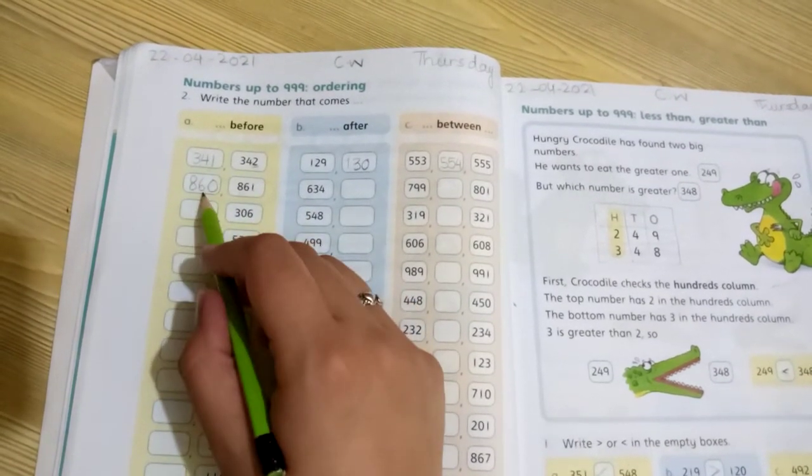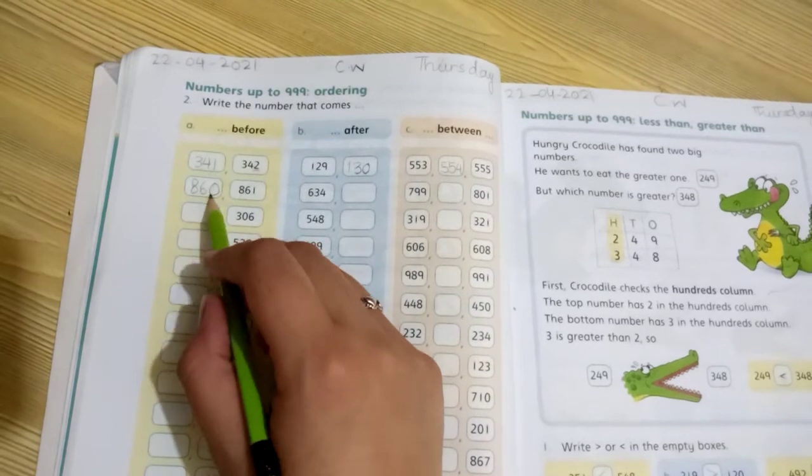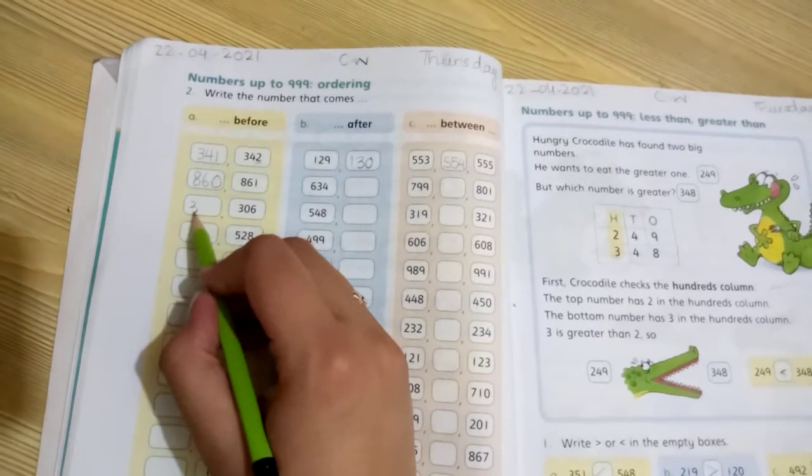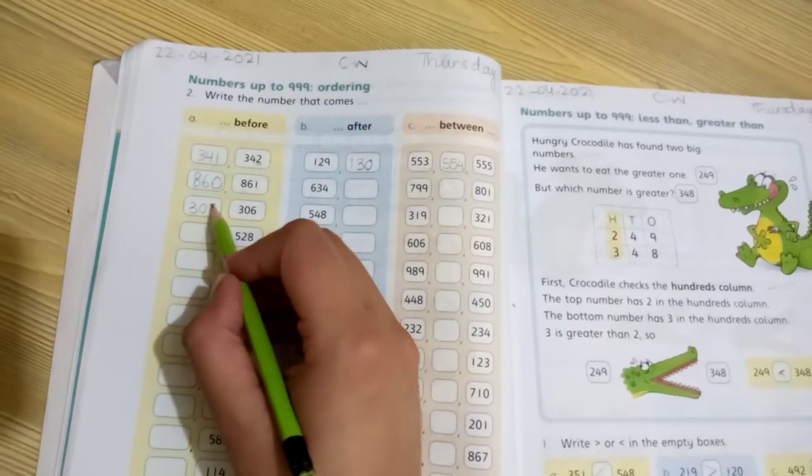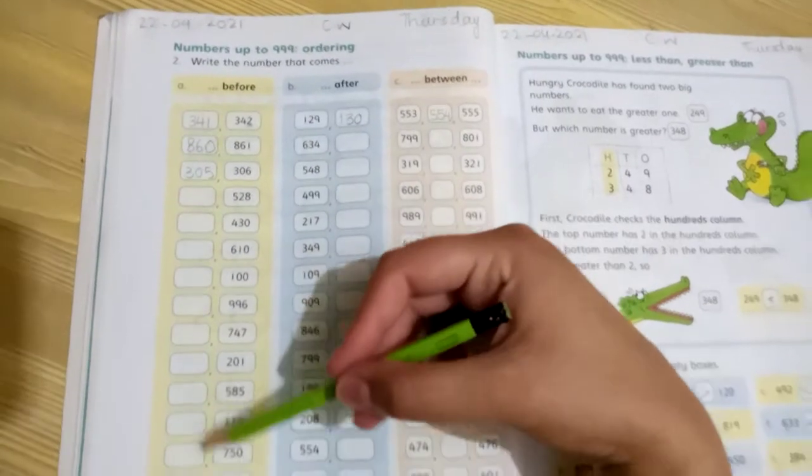861, 61's back will be 60, so 860 will be written. 306 will be 305. This way we will solve all the remaining questions.